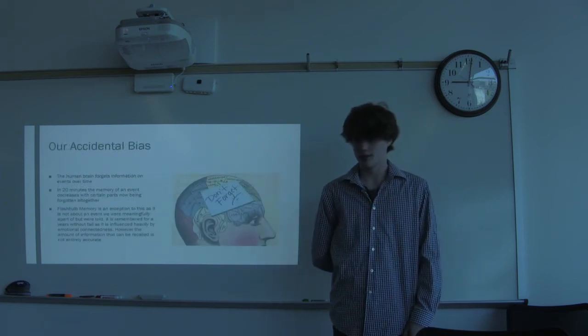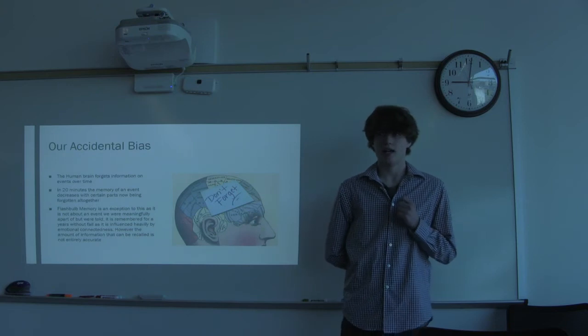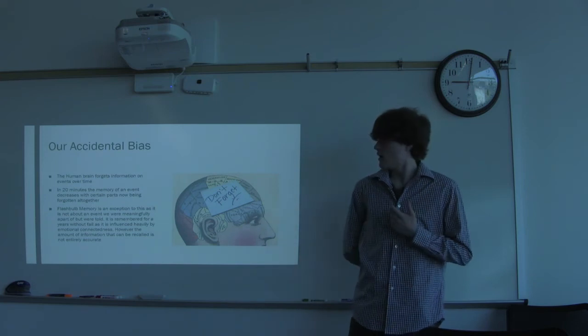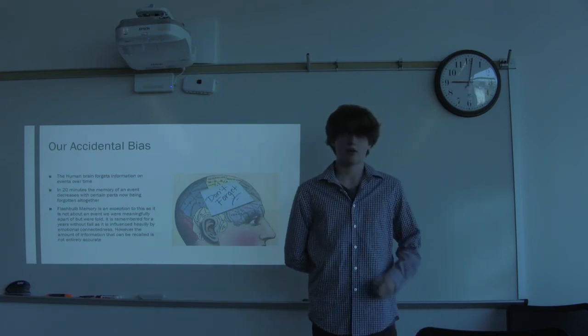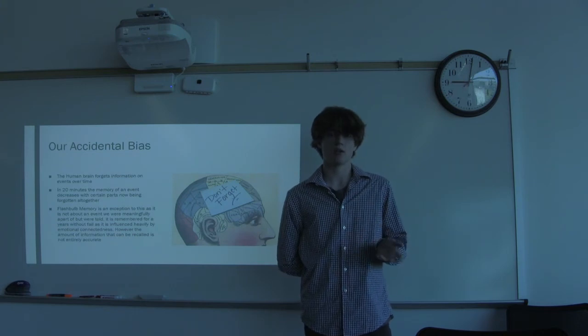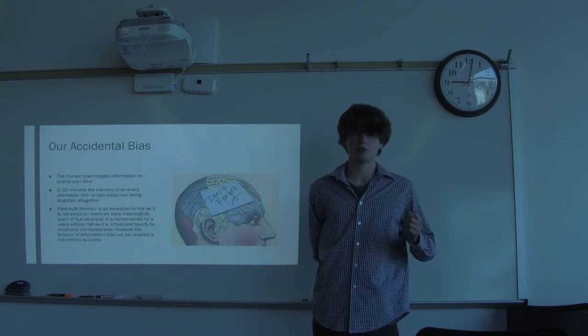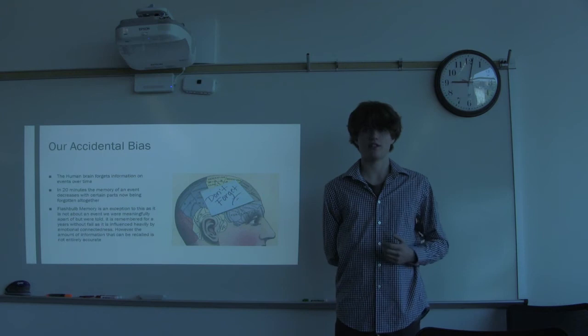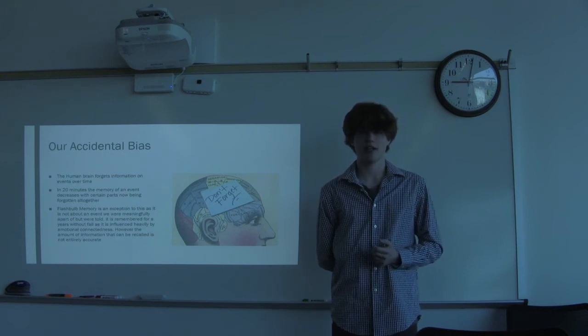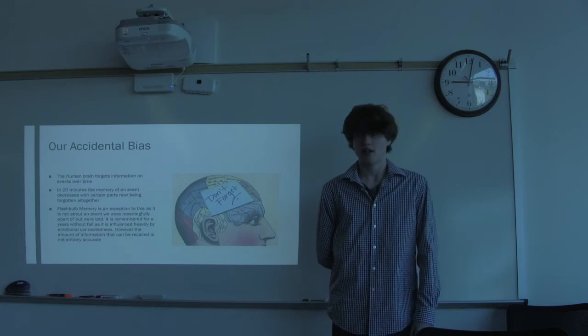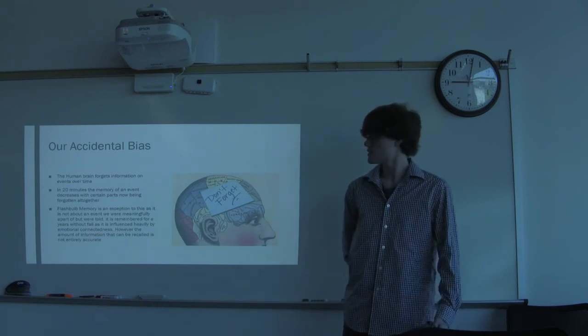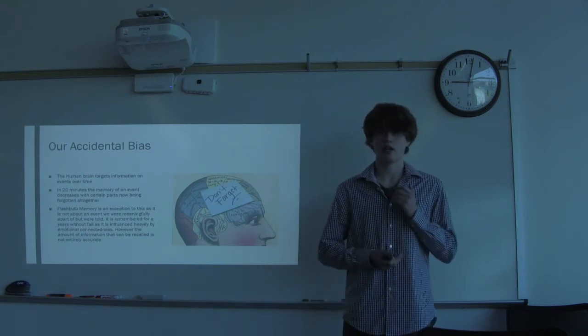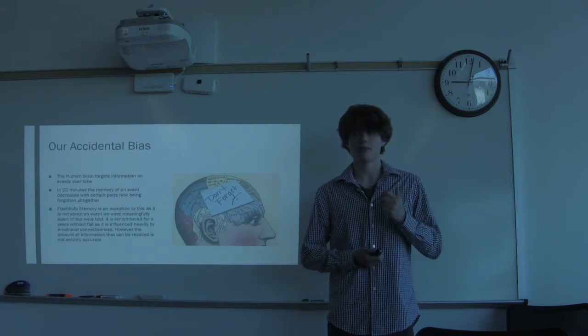Our accidental bias. So, our accidental bias is how our memory has on how we believe or how we perceive things. The human brain obviously forgets things. However, between 20 to 30 minutes, you forget more than you would in say like five minutes of an event happening. You will forget specific details of the event, but you also immediately forget all the details that you don't see as important. And that brings up another thing because our flashbulb memory is almost like the opposite of that. However, it has its differences.